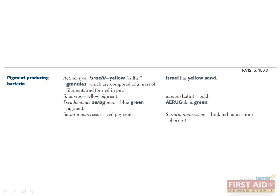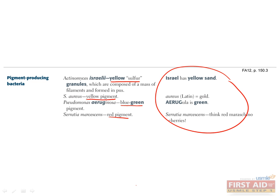These bacteria produce a unique pigment when grown on agar, which aids in identifying them. Actinomyces israelii can be distinguished by its yellow sulfur granules. Staph aureus has a more universal yellow pigment, Pseudomonas has a blue-green pigment, and Serratia marcescens has a red pigment. These mnemonics can be helpful in remembering these.